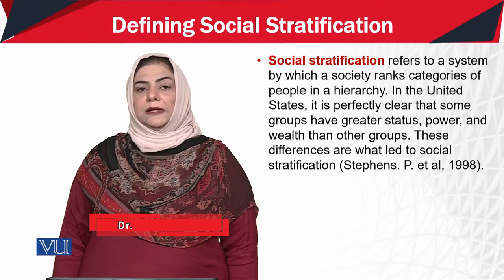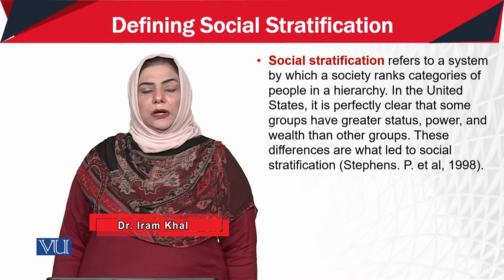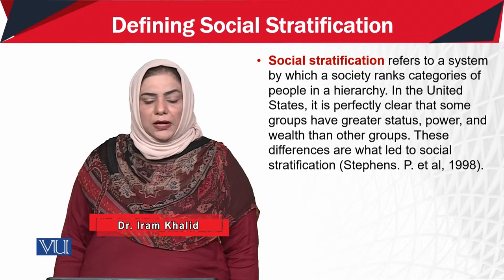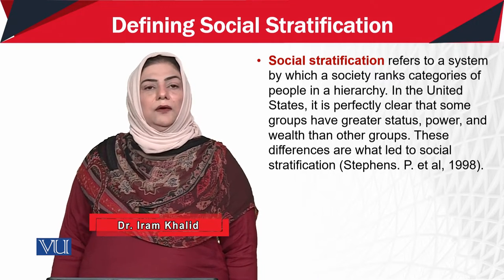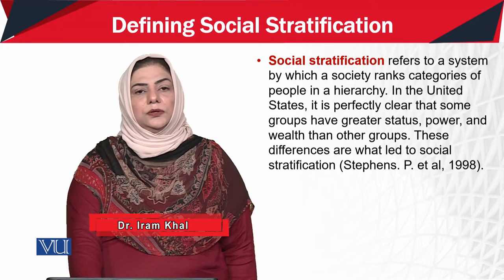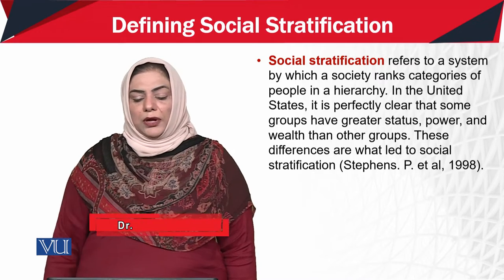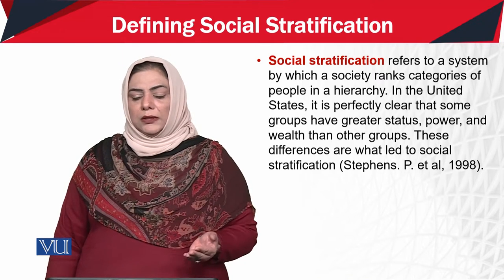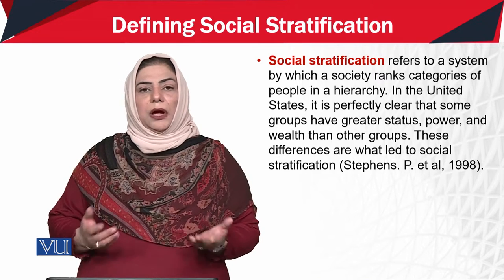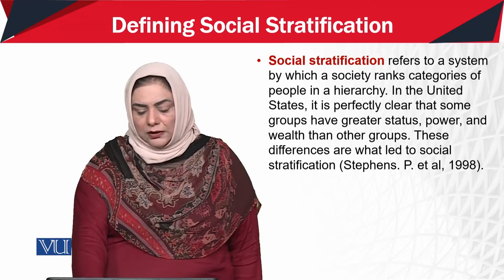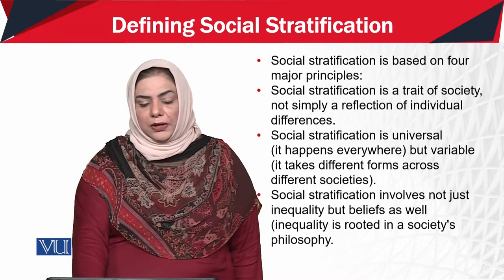Ani America jaysa mausra, jow developed democracy kehlata hai, wahaan bhi Social Stratification jow hai, woh exist kerti hai aur uski buniyad kya hai? Power hai aur wealth ka hona hai.